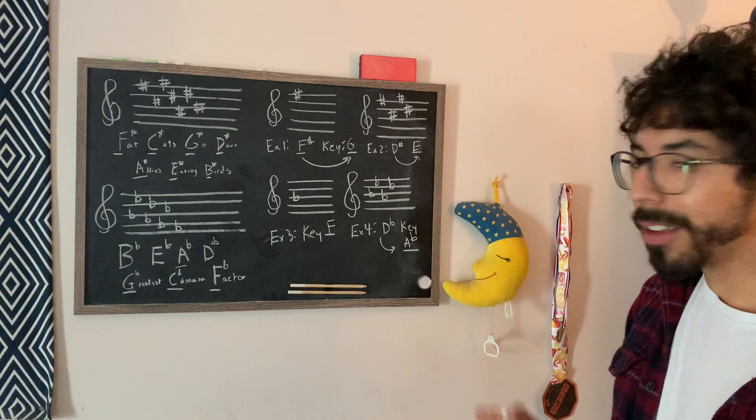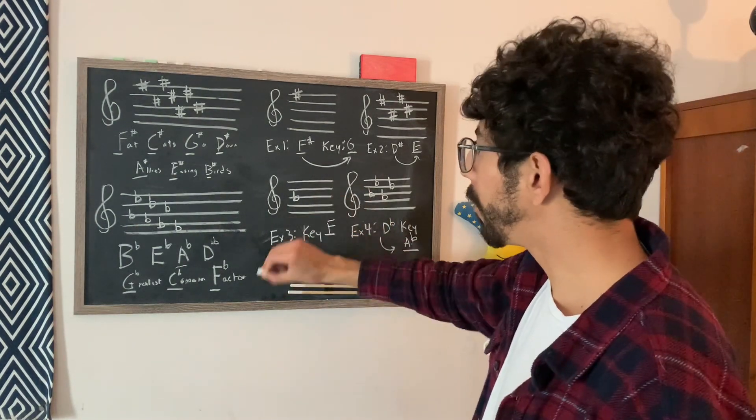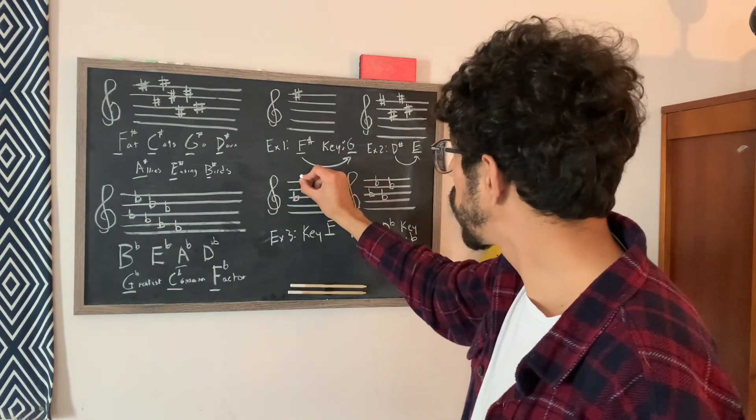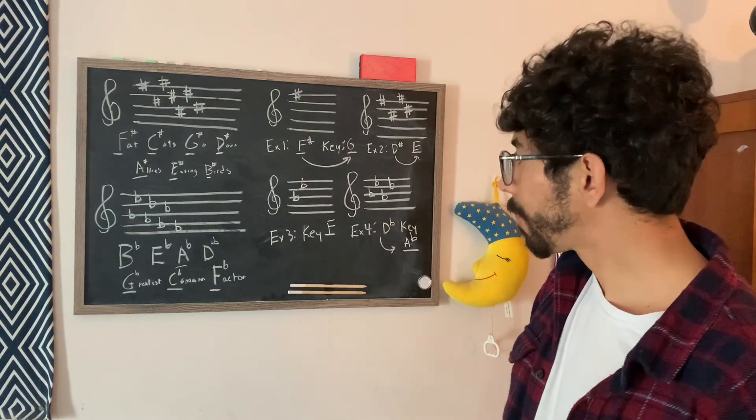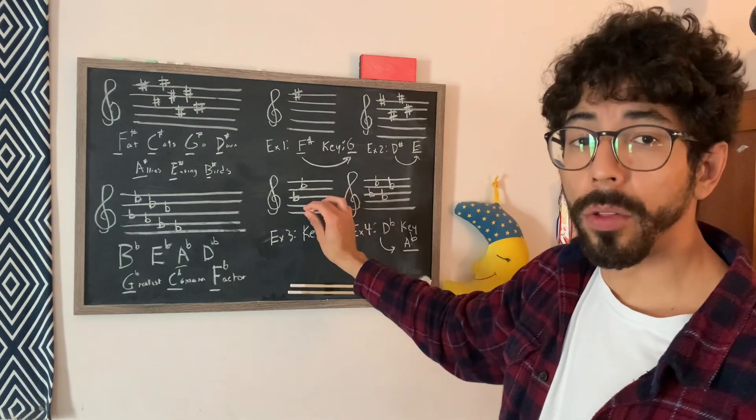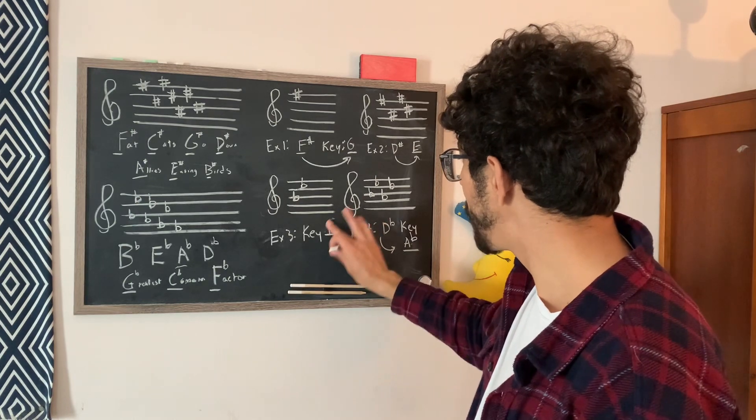So, it could get a little tricky, but, okay, say we add another flat here, so that we start with B flat. We're going to go to E flat, which is right here. So this has two flats, right? The last flat is E flat. So the second to last flat would be B flat. And that tells us that we're in B flat major.